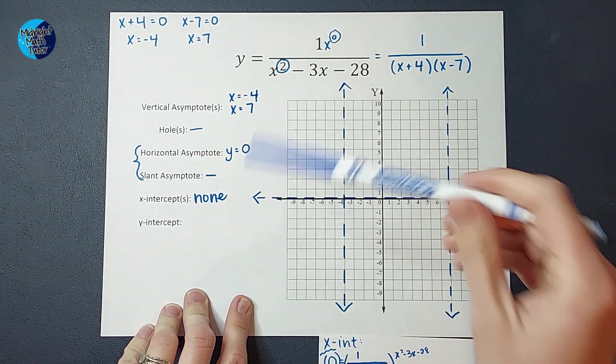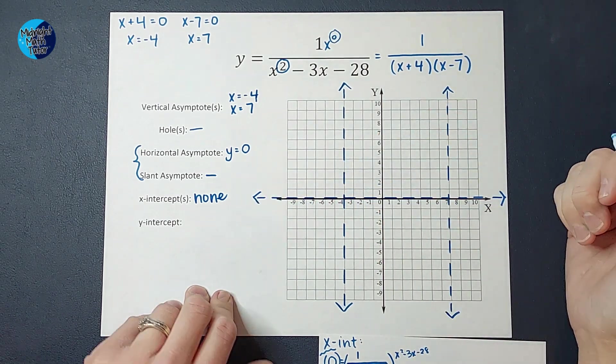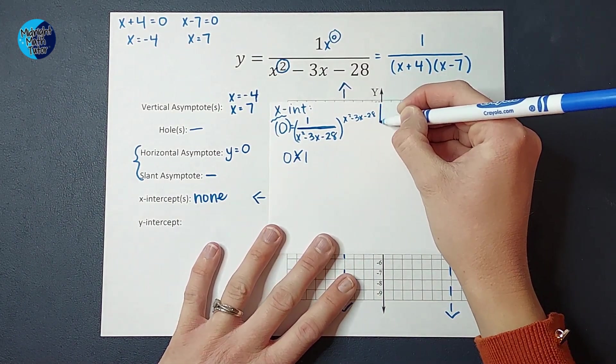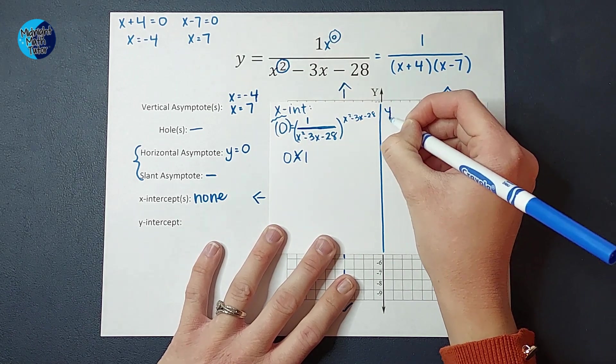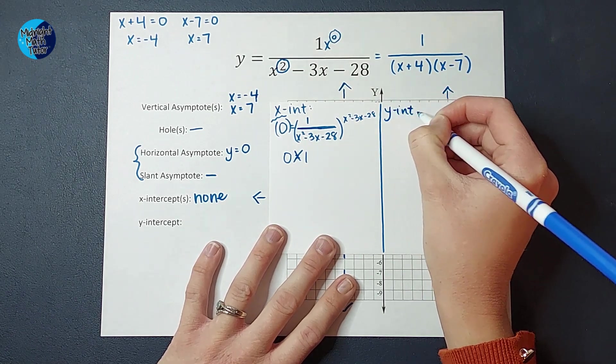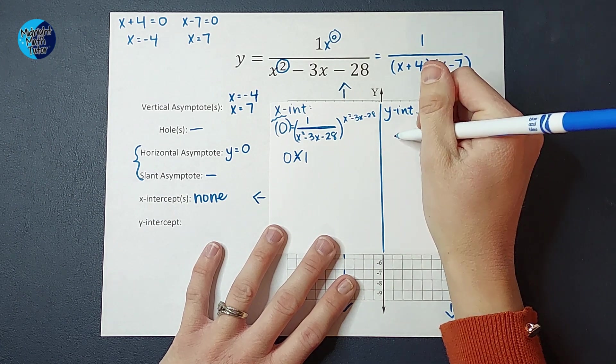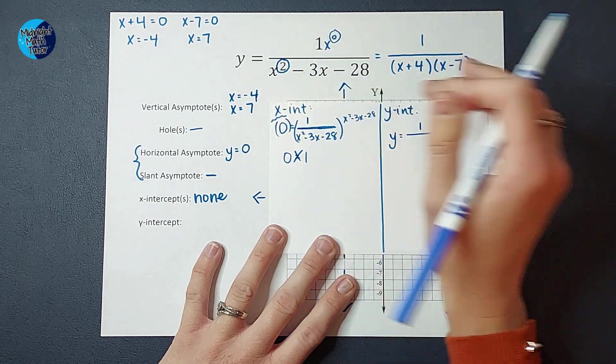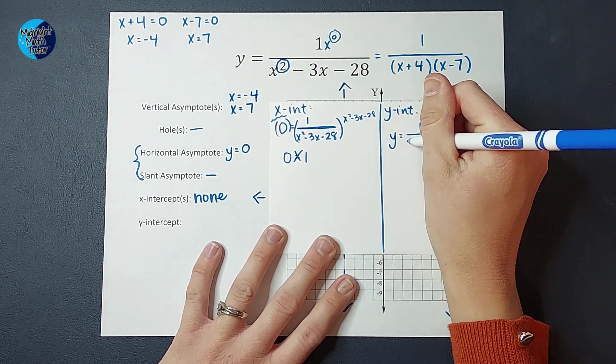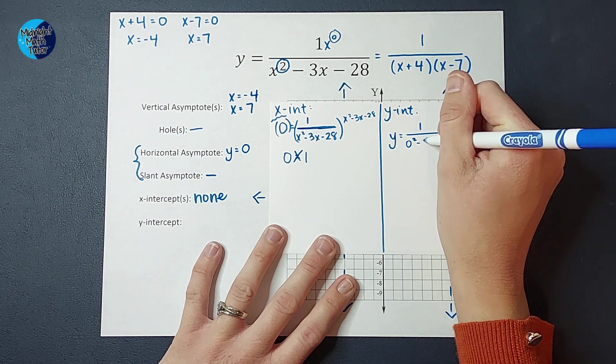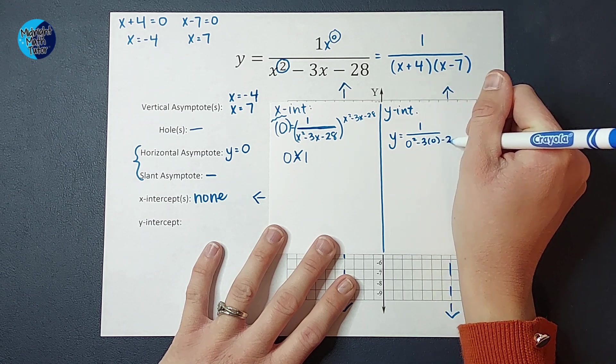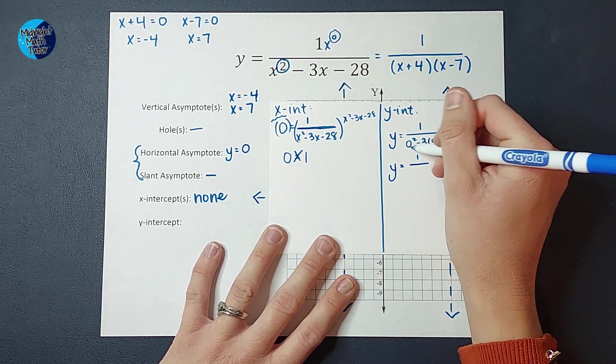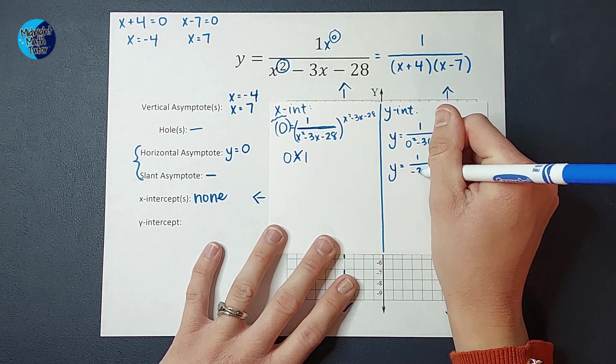My graph is not going to cross the x-axis. Oh, that's exciting and different. All right. So we don't have an x-intercept. But let's see if we have a y-intercept. So for my y-intercept, we go ahead and set x equal to 0. So I'm going to have y equals 1 over... I'm going to do this one. They're the same. You could plug it into either one. 0 squared minus 3 times 0 minus 28. So that leaves me with 1 over... These all end up being 0, and then I've just got negative 28.